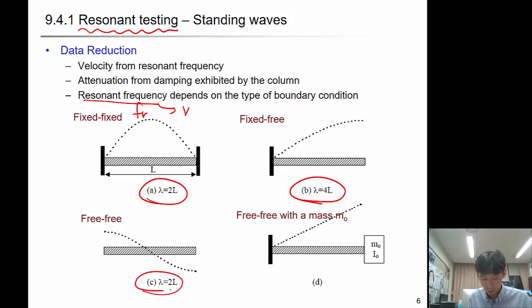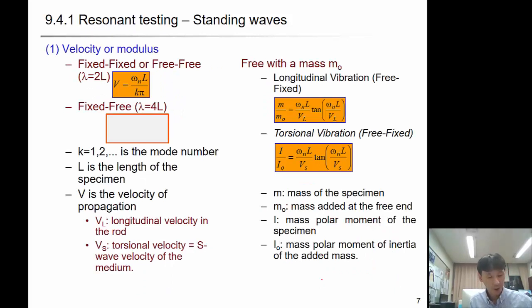If it's fixed boundary condition, the wavelength will be two times the specimen length. If it's fixed-free, it will be four times the specimen. If it's free-free, then two times the specimen length. If you have added mass at the top, then you'll need calibration for that using the Rayleigh method. In fixed-fixed or free-free condition, the velocity is given as: if you know the resonant frequency omega_n, then velocity will be omega_n times L over pi. For first mode, you can assume k is one. If it's fixed-free, multiply by two to this equation.